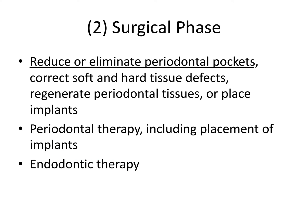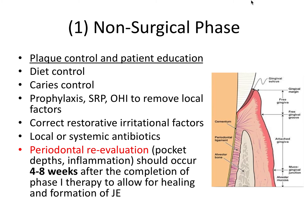The next phase, also known as phase two therapy, is the surgical phase. This is where you'd want to reduce or eliminate periodontal pockets, correct soft and hard tissue defects, regenerate periodontal tissue, or place implants. In phase two, we often flap open the gums to gain better vision and access to local factors like deep or tenacious calculus that couldn't be removed with scaling and root planing. The surgical phase comes into play when the non-surgical phase isn't proving successful.